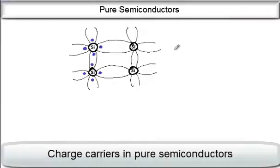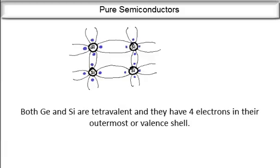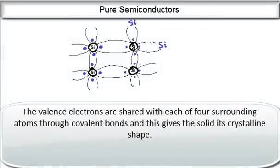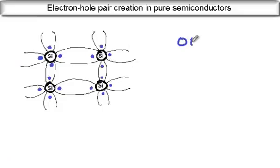Let's take a look at their electronic structure. Silicon and germanium are both tetravalent, which means they have four electrons in their outermost shells. We can draw four electrons in each of these atoms. Each valence electron is shared with four surrounding atoms — one silicon here, one here, one here, and one here. These covalent bonds are strong bonds and give the solid its crystalline shape. At zero Kelvin, all these valence electrons are firmly bound to the nucleus and cannot move at all, because these covalent bonds are all strong bonds.